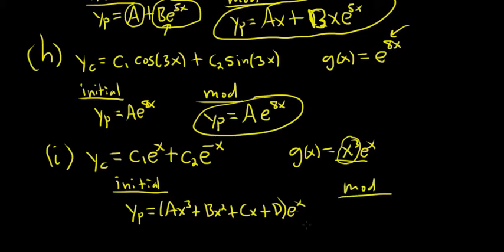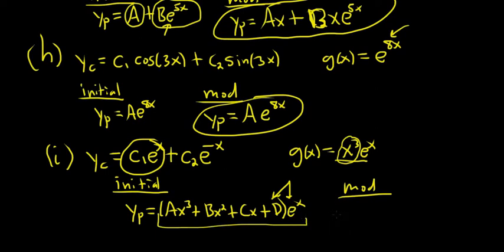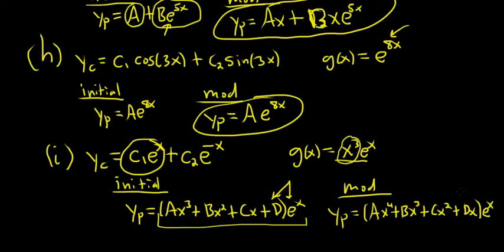Now we'll do our modified and check for repetition. You might think this is just a cubic with no repetition — but yes, there is: d e to the x repeats with C1 e to the x. So we have to multiply the whole thing by x — because it all came from one guess. So Yp equals ax to the fourth plus bx cubed plus cx squared plus dx, all times e to the x.